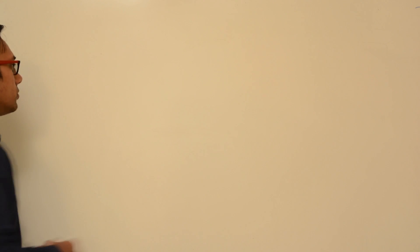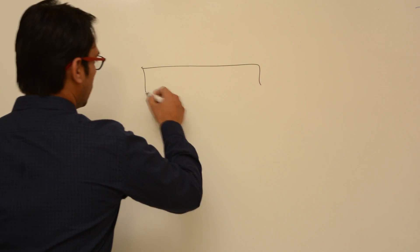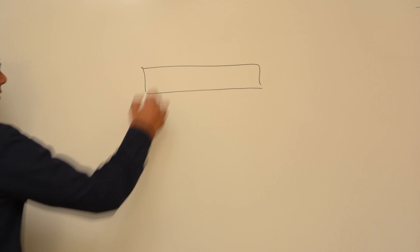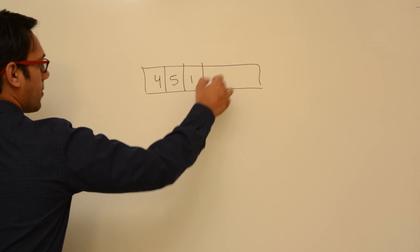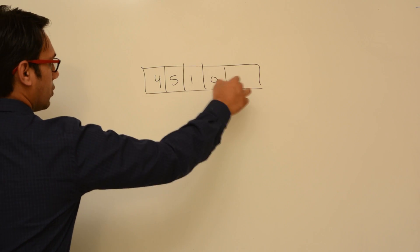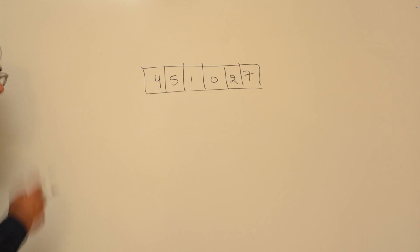In the previous video, we discussed the bubble sort algorithm. Now let us discuss the selection sort algorithm. Assume you are having this data: 4, 5, 1, 0, 2, and 7. So this is your array.